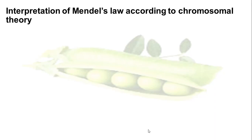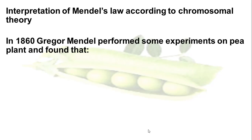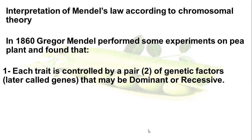Mendel is the father of the genetic science, and we will try to interpret Mendel's law according to the chromosomal theory. In 1860, Gregor Mendel, who was a priest in a church, performed some experiments on pea plants and found that each trait is controlled by a pair or two genetic factors. Later they were called genes, because the word 'gene' didn't come up until 1902. So Mendel discovered genes but didn't give them their names — he called them genetic factors.